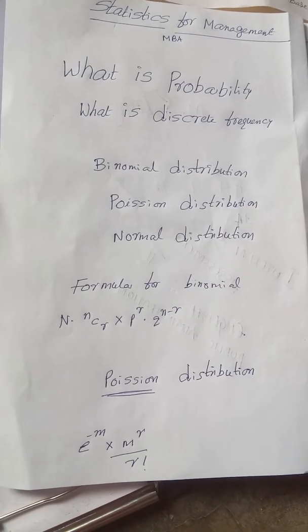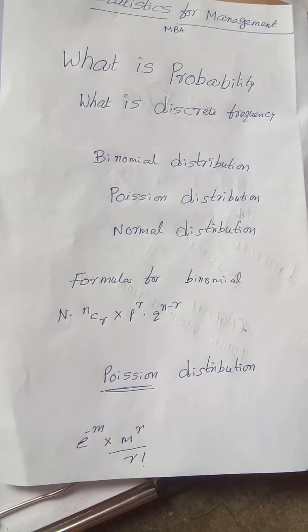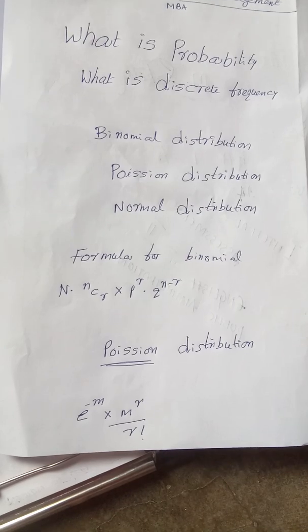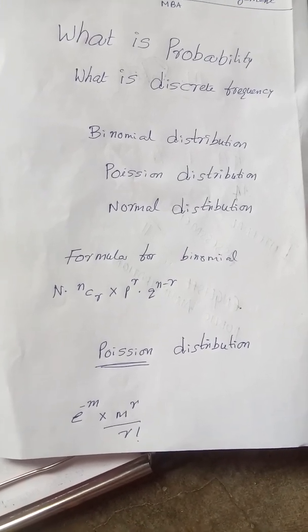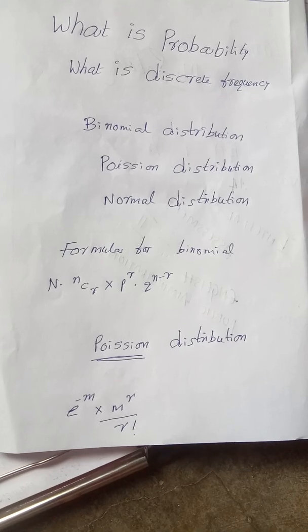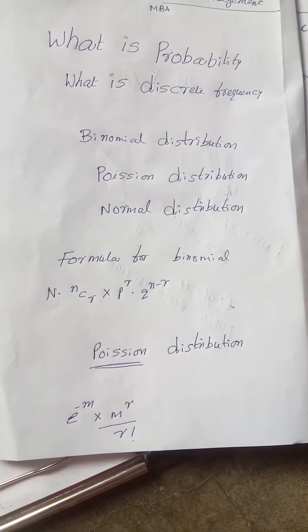Among these three - binomial, Poisson, and normal distribution - is most important. Here you will find the formulas for expected frequencies in binomial and Poisson distribution. Let us see one problem in binomial distribution.